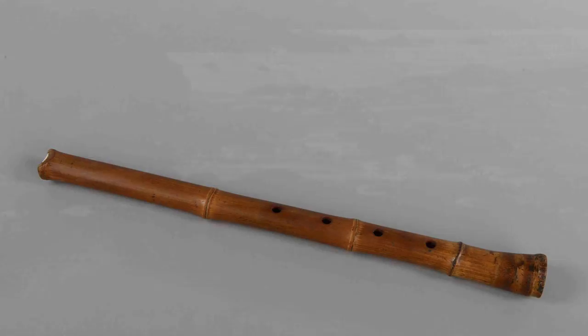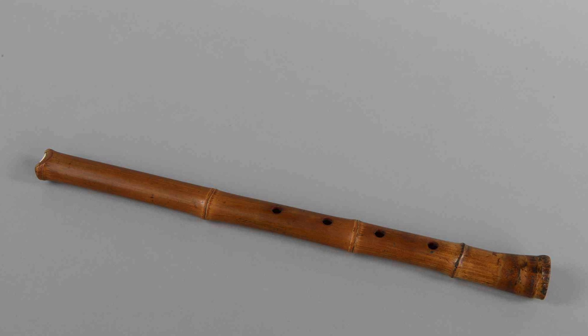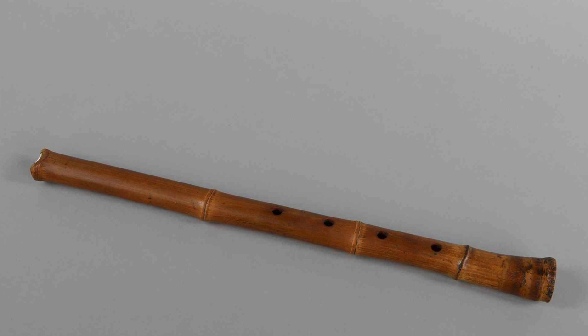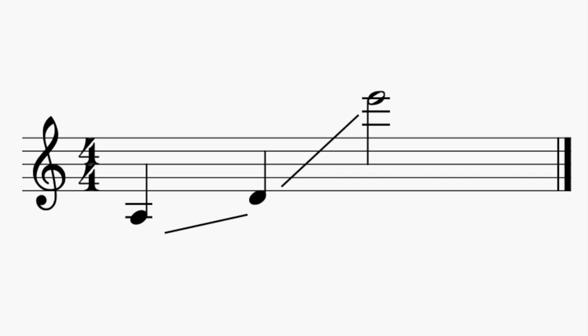Next we have the Shakuhachi. This instrument is made from the root end of a bamboo stock. It's played similar to a recorder and actually resembles one. The range is from D above middle C to the E above the staff. However, some Shakuhachis are actually a little bit longer in length and they can get down to notes as low as the A below middle C.